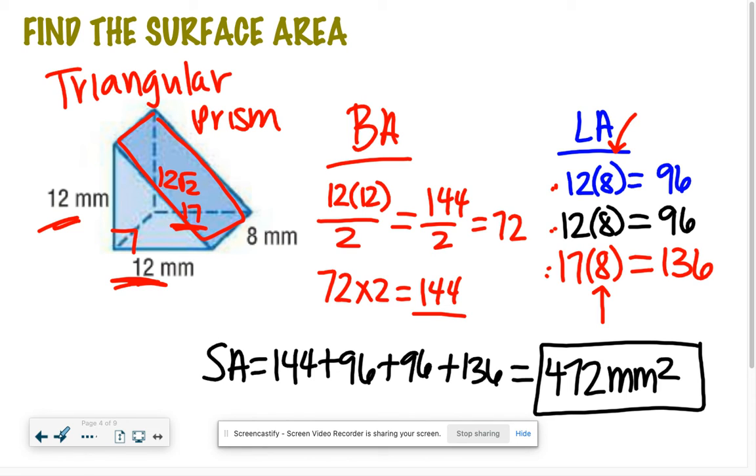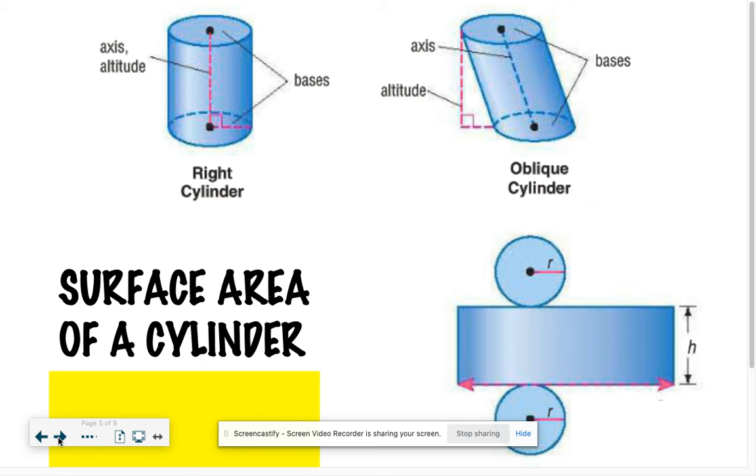Now let's move on to cylinders, which I think you guys will thoroughly enjoy because there's a nice formula to go with it. So again, we have a right cylinder and an oblique cylinder. A cylinder - you guys think of like a Pringles can or just a can in general, like a soup can. We have two bases here.